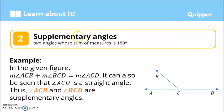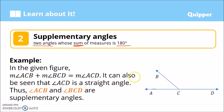Now, what are supplementary angles? If complementary angles are two angles that add up to 90 degrees, supplementary angles are two angles that add up to 180 degrees. These are two angles whose sum of measures is 180 degrees. So in the given example, we have the measure of angle ACB...